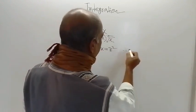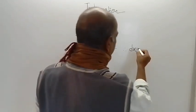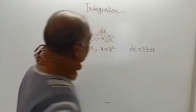So on differentiation, in the left hand side we are getting dx, and in the right hand side we are getting 2z dz.